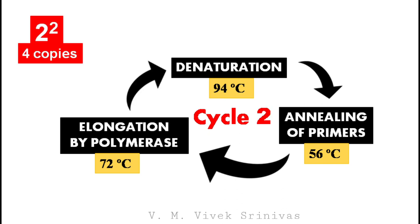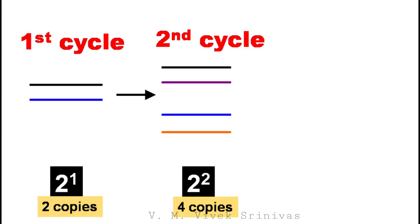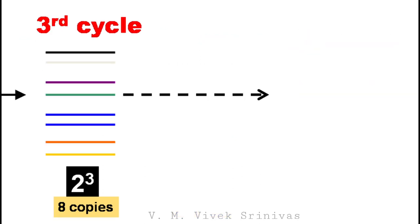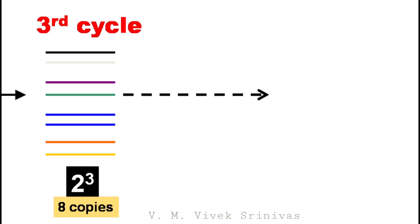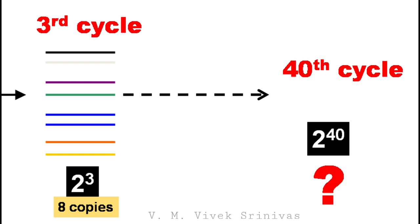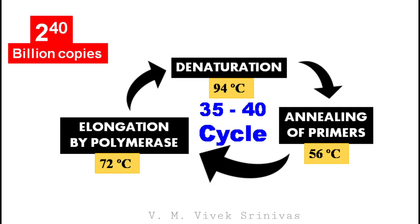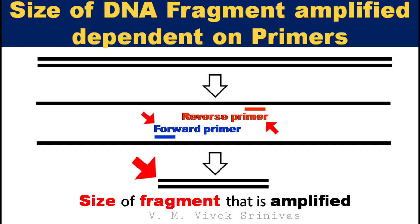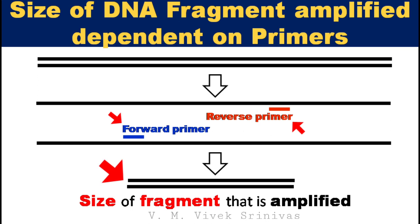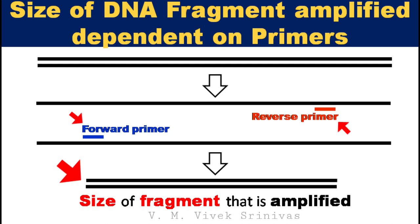On running the thermocycler: at the end of the first PCR cycle, two copies of double-stranded DNA are obtained; at the end of the second cycle, four copies; and at the end of the third cycle, eight copies — doubling each cycle. At the end of 40 cycles, we will have billions of copies of the same DNA fragment. In general, 35 to 40 PCR cycles are carried out. The size of the DNA fragment produced depends on the primers, as the reaction amplifies the DNA section between the two primers.